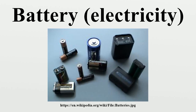C-Rate: The C-Rate is a measure of the rate at which a battery is being discharged. It is defined as the discharge current divided by the theoretical current draw under which the battery would deliver its nominal rated capacity in 1 hour. A 1C discharge rate would deliver the battery's rated capacity in 1 hour.